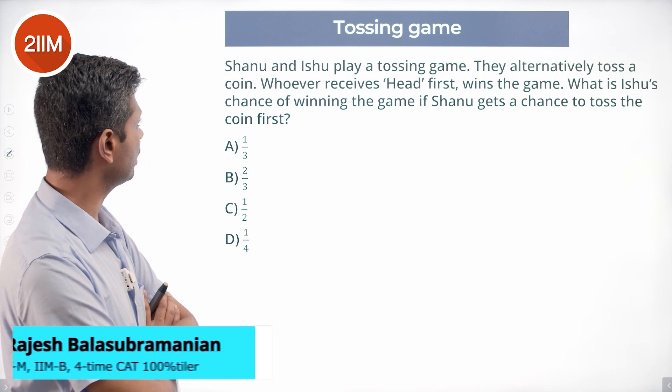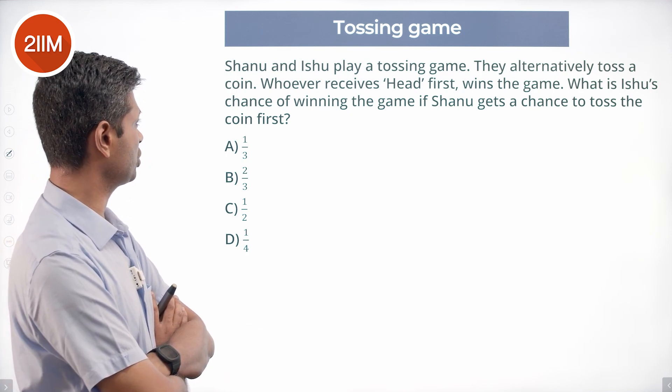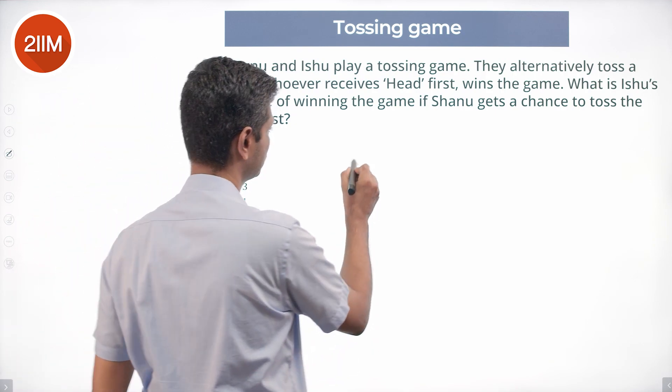Shanu and Ishu play a tossing game. They alternately toss a coin. Whoever receives head first wins the game. What is Ishu's chance of winning the game if Shanu gets a chance to toss the coin first?